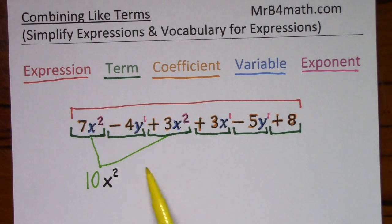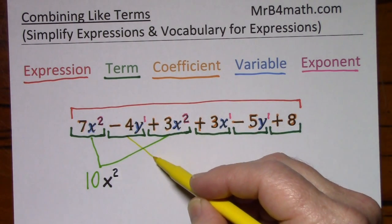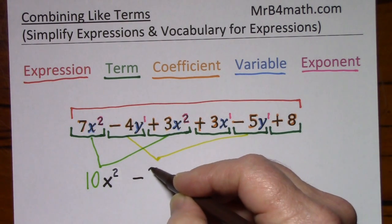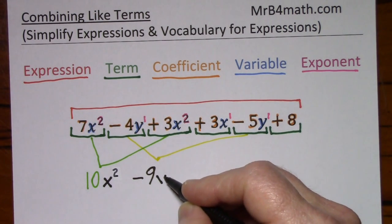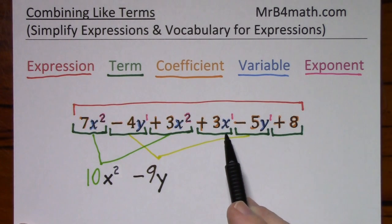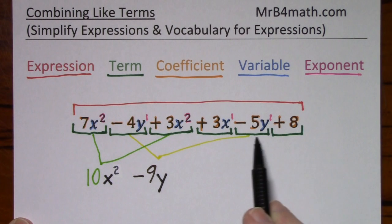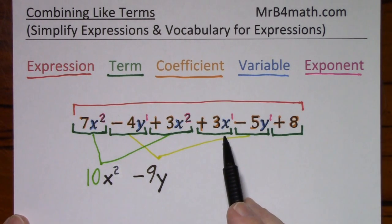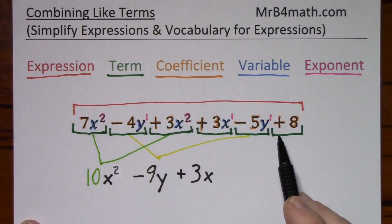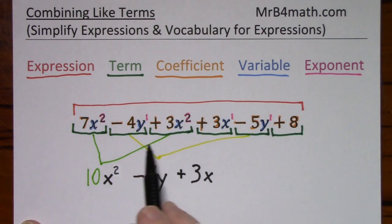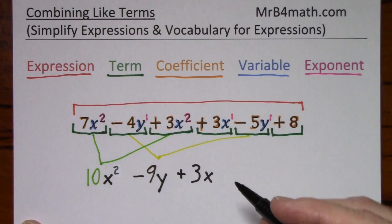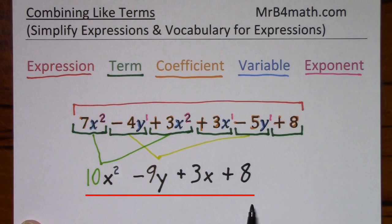Looking for more like terms, we have y to the first and y to the first, so we can combine them. The coefficients negative 4 and negative 5 combine to give you negative 9, and y to the first power comes along for the ride. Now with this x to the first power, there's not another x to the first in this expression, so I cannot combine positive 3x with any other term — I simply bring it down. Likewise with positive 8: since there's no other like term, I simply bring it down. This is the simplified expression.